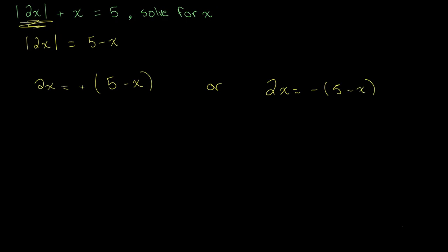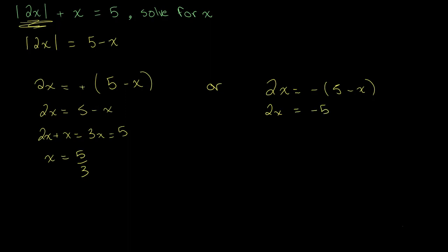Solving the first case: 2x equals 5 minus x, bring the x over to get 3x equals 5, so x equals 5 over 3. For the second case: 2x equals negative 5 plus x — a negative times a negative makes a positive — so 2x minus x equals negative 5, giving x equals negative 5. Our two possible values are x equals 5 over 3 or x equals negative 5.